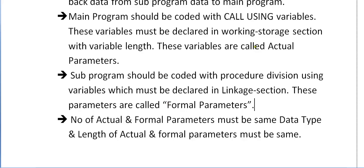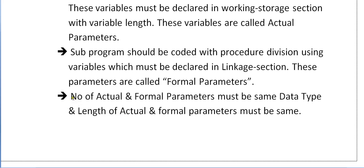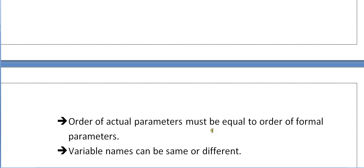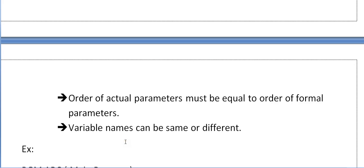The variables declared in the main program are called actual parameters, and the variables declared in the sub program's Linkage Section are called formal parameters. The number of actual and formal parameters must be the same, with the same data type and the same length. The order of actual parameters must equal the order of formal parameters — if you are using three variables in the main, the sub program must also use three variables. Variable names can be the same or different.